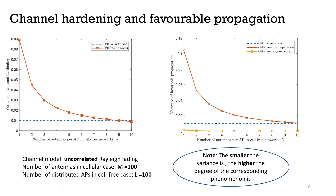The left figure represents the degree of channel hardening, and the higher the variance is, the lower the corresponding effect is. So it's clear that the red line representing the cell-free network needs eight times more total antennas to achieve the same level of channel hardening as the blue line representing the cellular case. Similarly, in the right figure representing the favorable propagation degree, with the same number of total antennas, for most users, cell-free will have a relatively lower degree of favorable propagation.